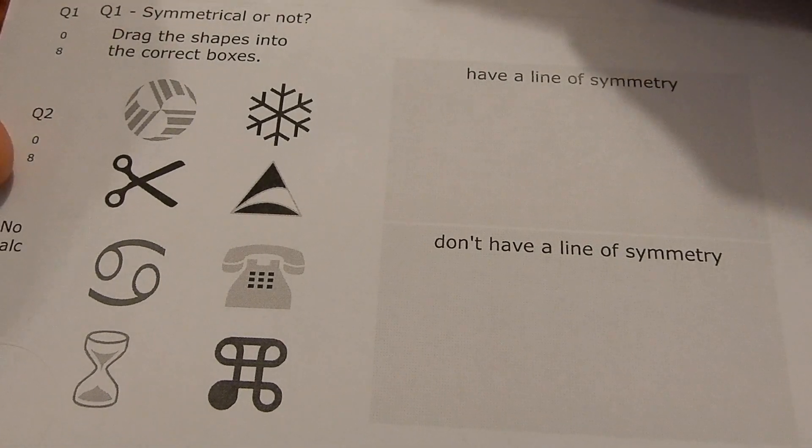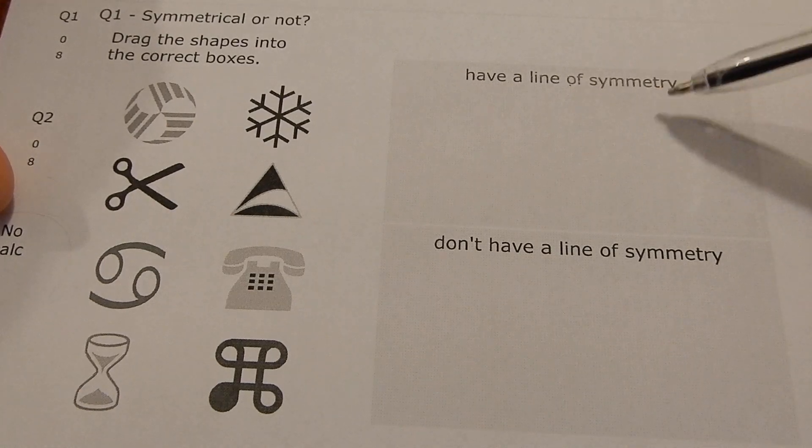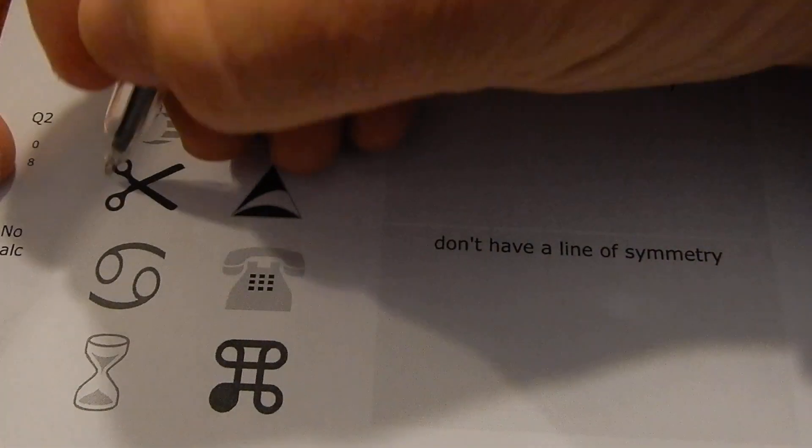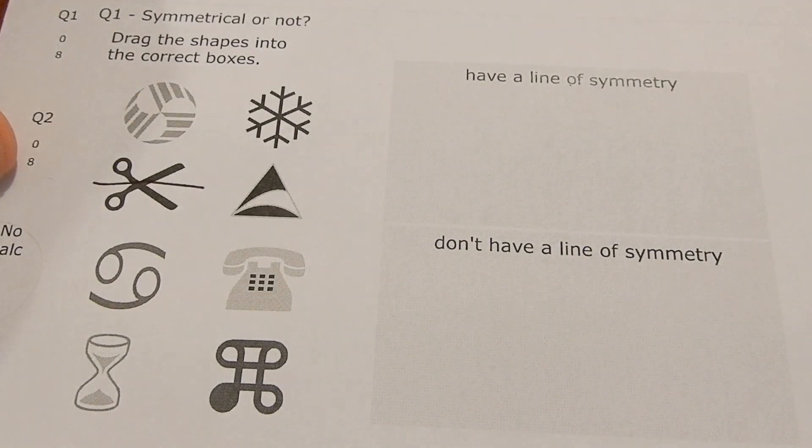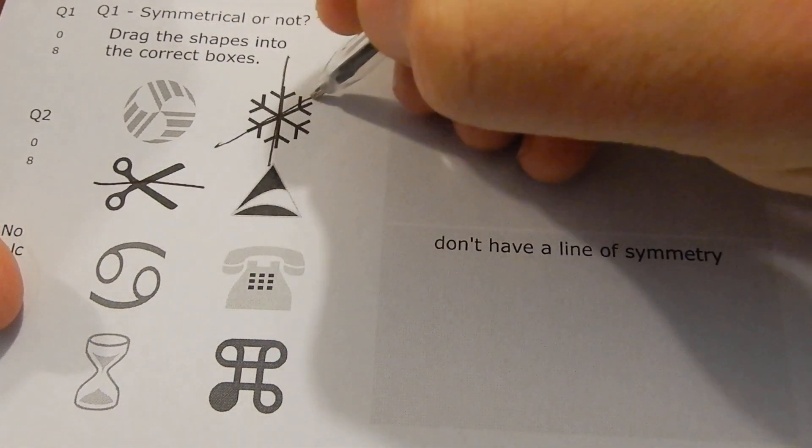Symmetry or not? Drag the shapes into the correct boxes. Okay, have a line of symmetry. Who's got a line of symmetry? That's got a mirror line of symmetry. This one's got a mirror, and what, one of the several.